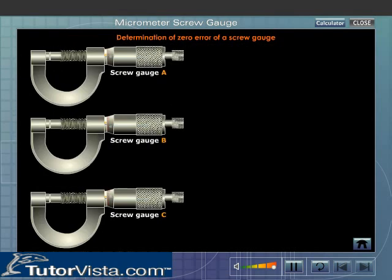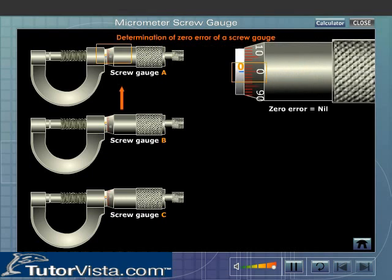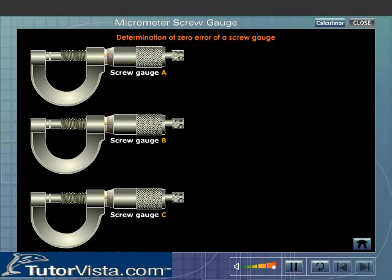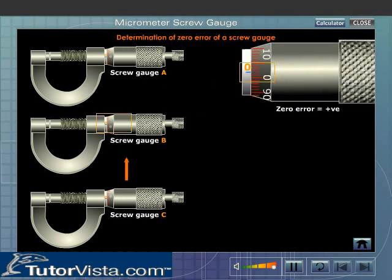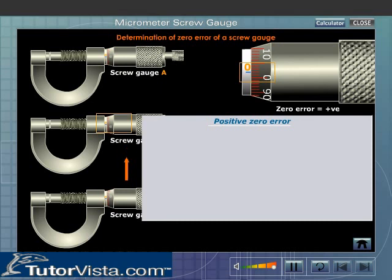Shown here are three screw gauges A, B and C. In screw gauge A, the zero of the circular scale and that of the main scale coincide. That is the screw gauge A is free of zero error. In screw gauge B, the zero of the circular scale is below the reference line of the main scale. The screw gauge is having a positive zero error. Let us now find out the positive zero error.